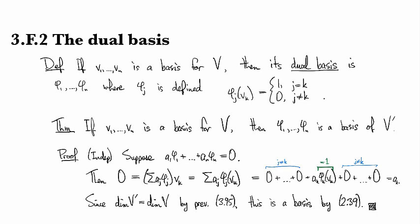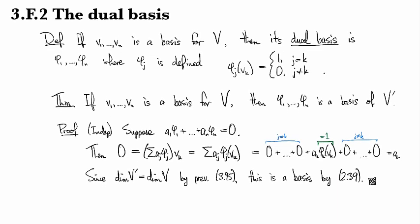And then just as a final word on the matter, I want to point out that we will see this computation repeatedly: that the sum of aj vj of vk is ak. So that is a great one to remember.